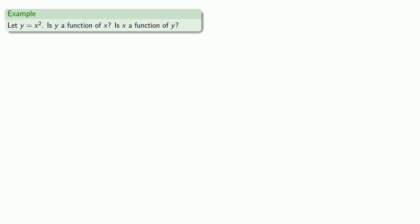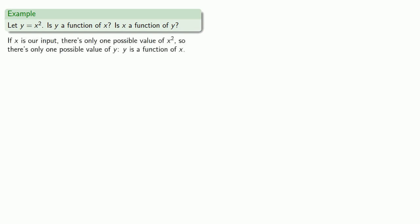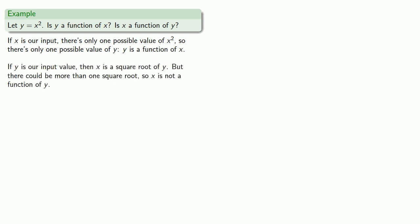Now we might actually have an algebraic relationship between the variables. For example, y equals x squared. Is y a function of x, or is x a function of y? If x is our input, there is only one possible value of x squared, so there is only one possible value of y — y is a function of x. If y is our input value, then x is a square root of y. But there could be more than one square root, so x is not a function of y.